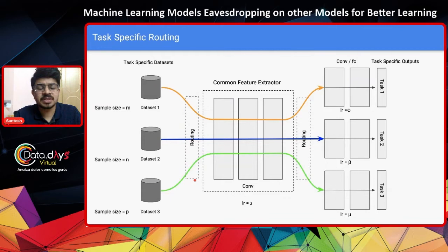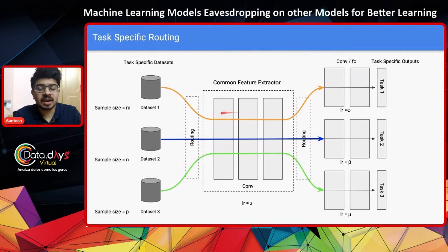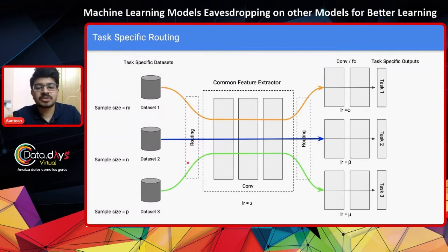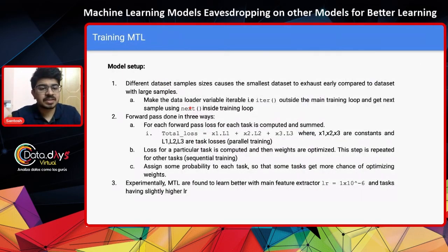Another specific use case of the routing mechanism is assigning a set of probabilities for different datasets. You may want task one to optimize its weights more often than dataset two or dataset three, creating some extra bias for task one. By assigning some set of probabilities or some randomness, you can set up the routing mechanism — training serially or by assigning probability.